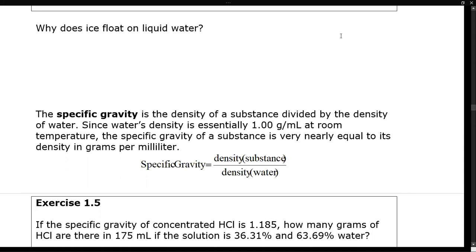That brings us to talking about specific gravity. Specific gravity is the density of a substance divided by the density of water. Since water's density is essentially 1.00 grams per milliliter at room temperature, the specific gravity of a substance is nearly equal to the grams per milliliter density, just it won't have a unit. Since the units will cancel, specific gravity ends up being a unitless number.